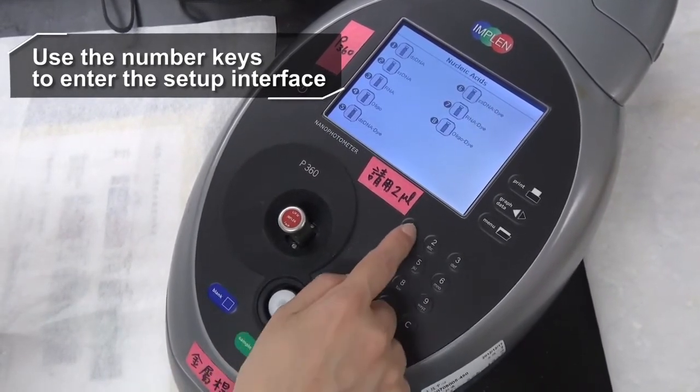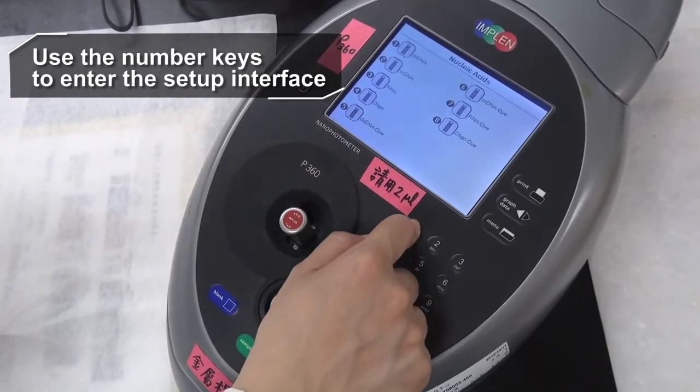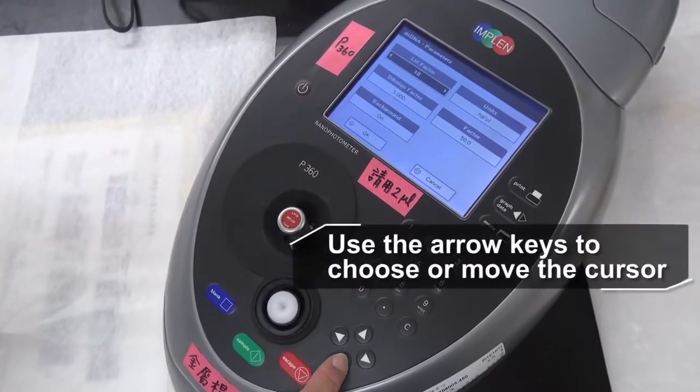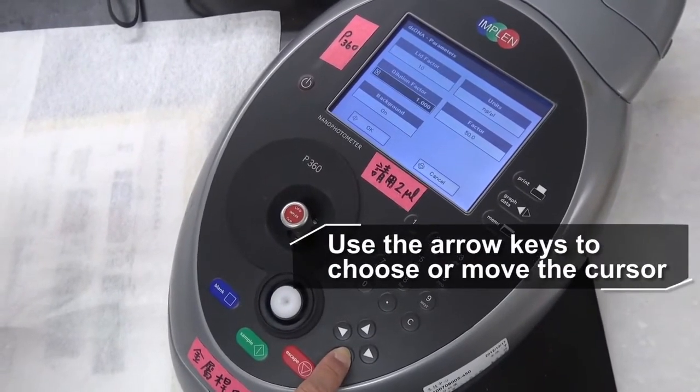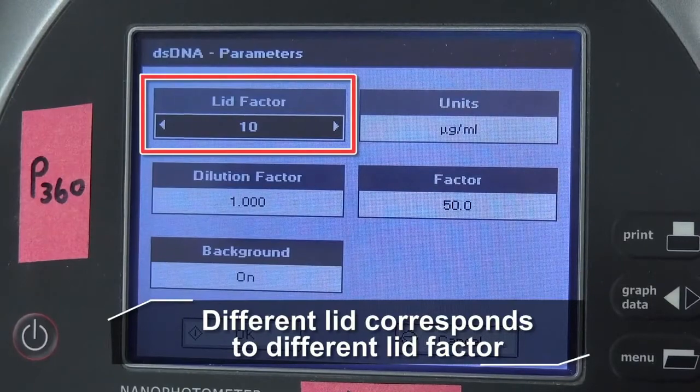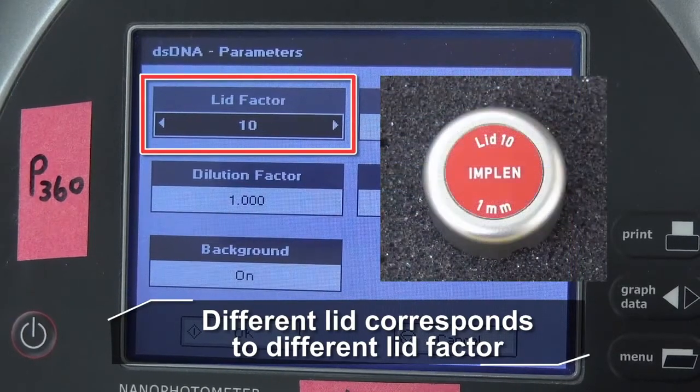For double-stranded DNA, pressing number 1 three times brings up the setup interface. Use the arrow keys to choose parameter or move the cursor to make changes. Different lid corresponds to different lid factor, which is labeled on each lid.